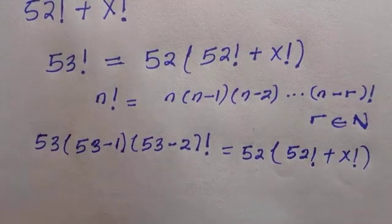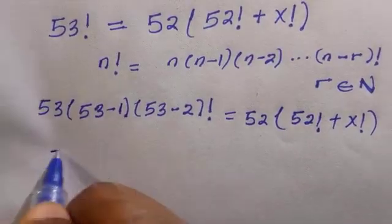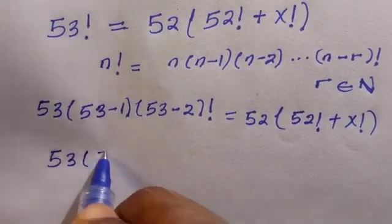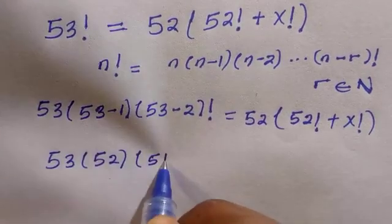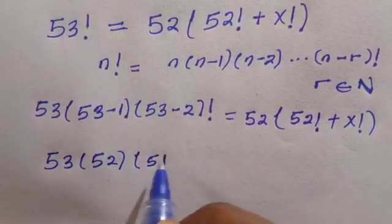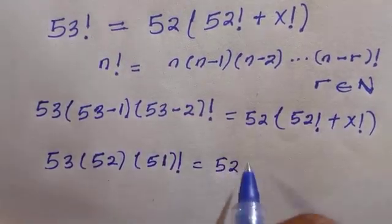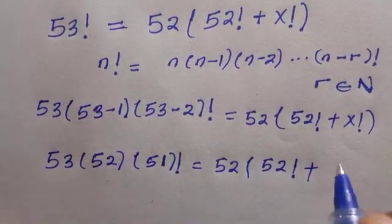If you proceed with the next step, we have 53 times 52 times 51 factorial, and this equals 52 times the quantity 52 factorial plus x factorial.